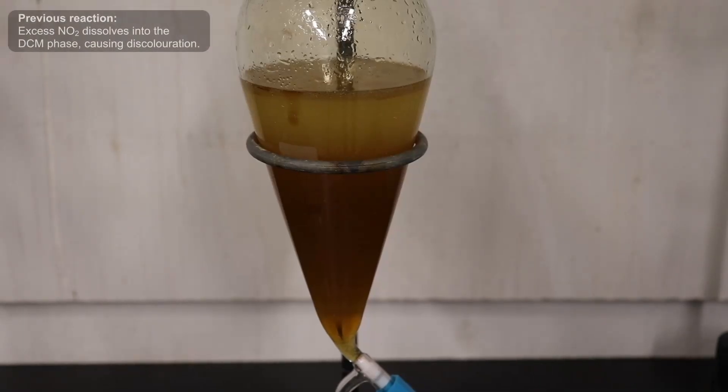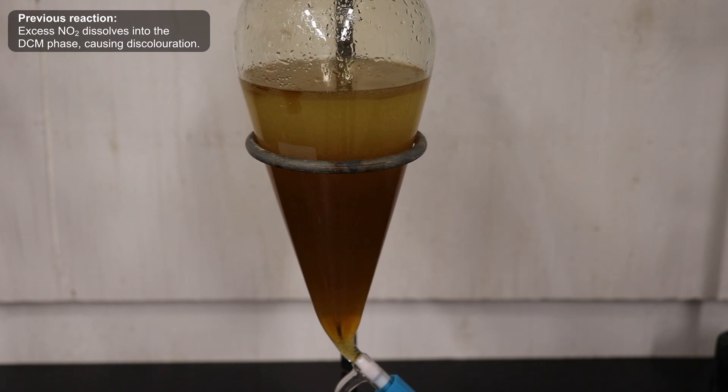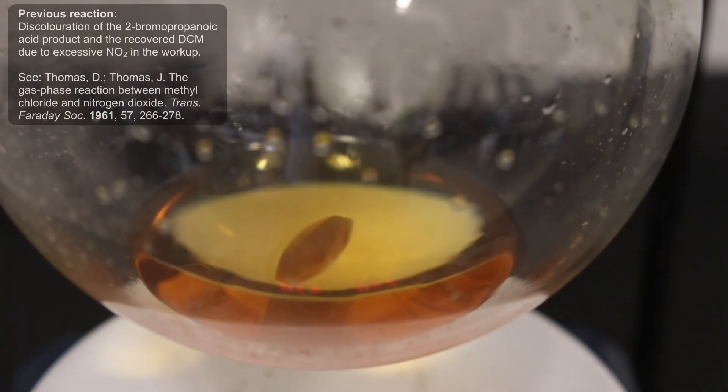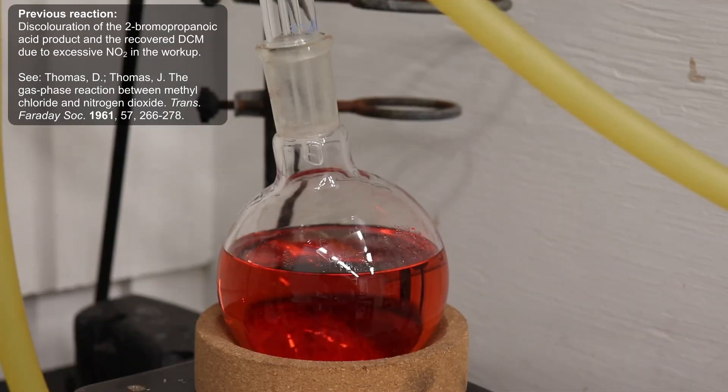The reason for doing this sparging is because in the next step, we'll be doing an extraction with dichloromethane, and DCM can react with nitrogen dioxide, forming colored impurities. These impurities will end up discoloring our final product, and will also carry over with the distilled DCM, hampering efforts to recycle the solvent.